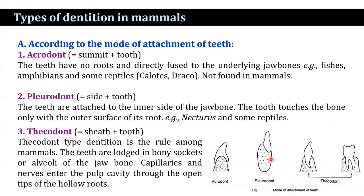The thecodont type is the rule among mammals. In this type, the teeth are lodged in the bony socket, or alveoli, of the jawbone. Capillaries and nerves enter the pulp cavity through the open tips of the hollow roots.